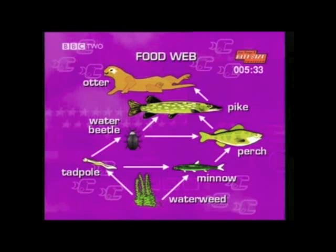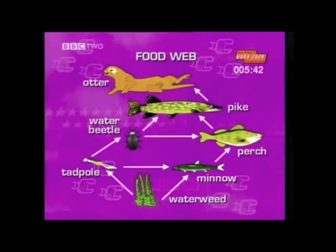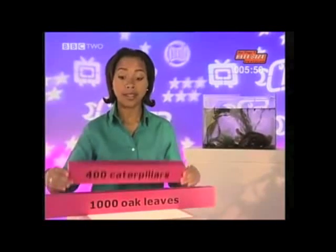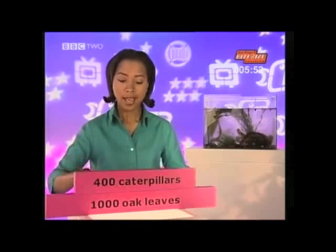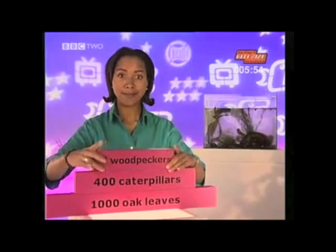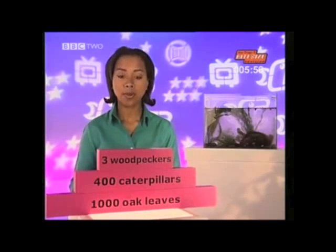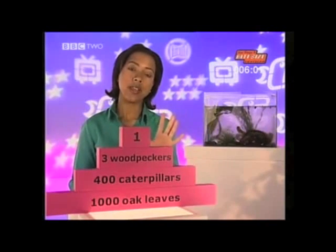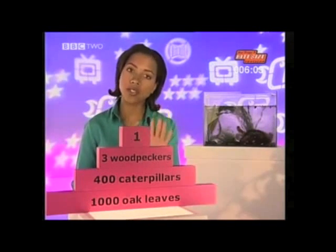These arrows also represent the direction of energy flow through a habitat. And as you go up a particular food chain, the number of organisms decreases. If we look at another food chain, we can start with leaves, that are eaten by caterpillars, and then woodpeckers, and finally the top carnivore is one kestrel. As we go up the food chain, the number of organisms goes down.